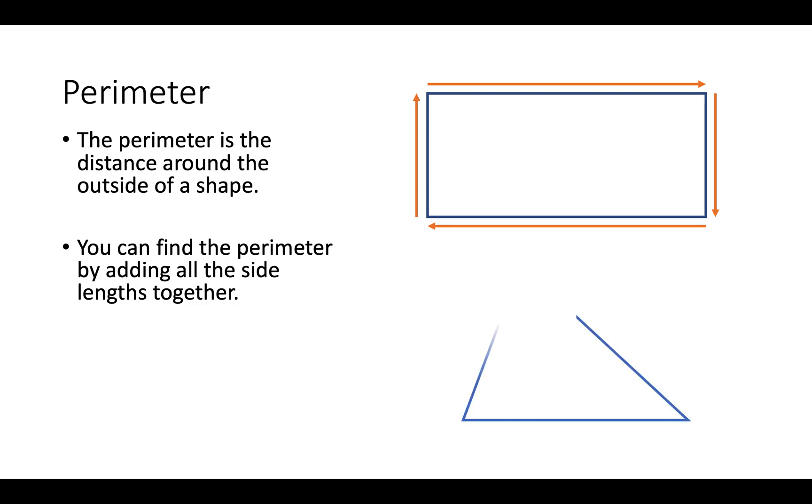And for a triangle it looks like this, where you add up all the sides together. It's like the distance you will walk if you walked around the outside of the shape.